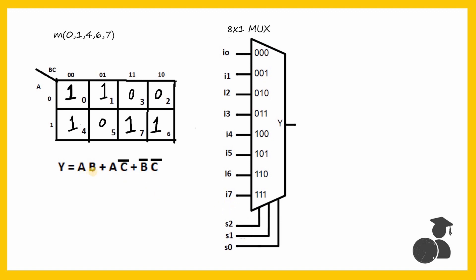Let's allocate the three variables A, B, and C to our select lines such that select line S2 represents the MSB, that is A, followed by B and then C. So when S2, S1, S0 are all 0, it would be the first box in our Kmap — that is 0, 0, 0 — and the input would be 1.